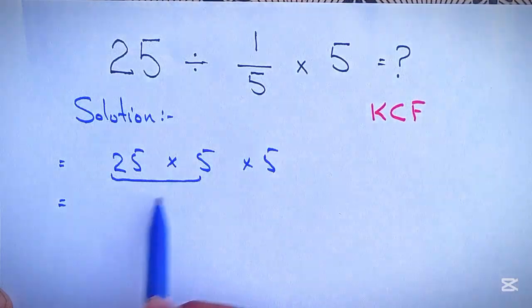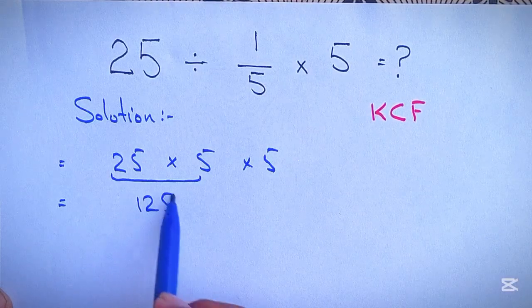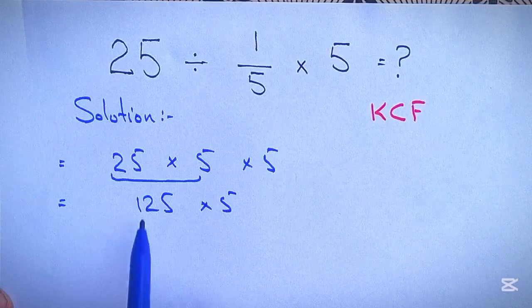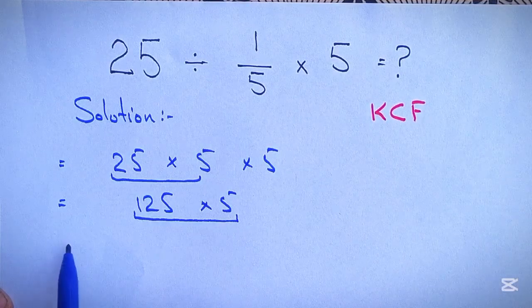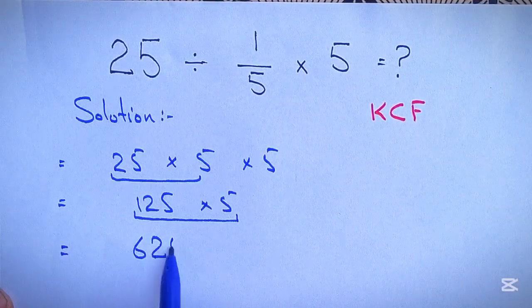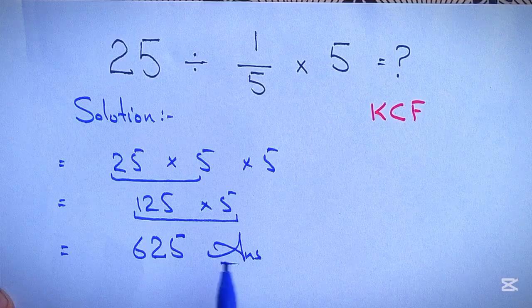25 times 5 gives us 125. 125 multiply with 5 and this is equal to 625.